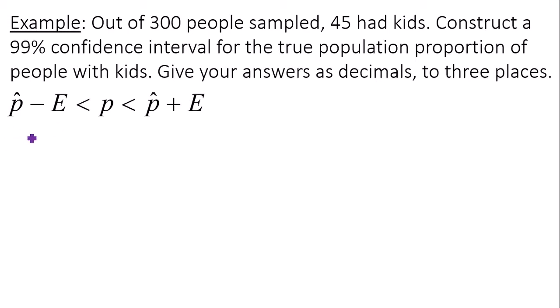First we'll start off with the sample proportion, p hat. That is the number of people that have kids. Well there's 45 out of 300. 45 out of 300 gives you a sample proportion of about 0.15.